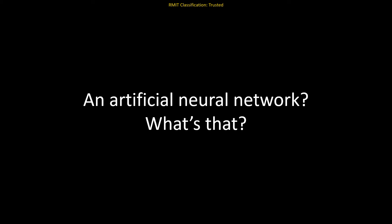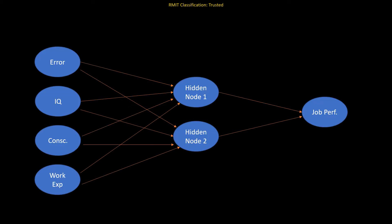This is what such an artificial neural network might look like. So here you have a very simple artificial neural network called a multilayer perceptron. There are four input variables on the left. So on the top, there's an error term, which you don't need to worry about because it's basically all of the other variables not included in your model. You also have IQ, conscientiousness and work experience.